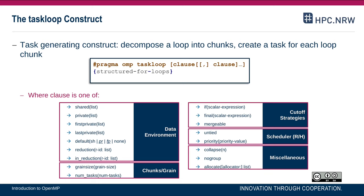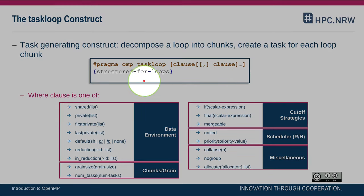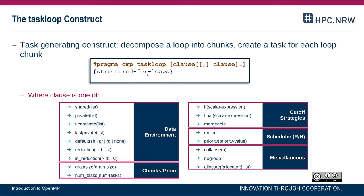The high-level view of the task loop construct is shown here. It is followed by a structured for loop, very similar to what we learned about in the for worksharing construct, and it accepts a set of clauses. These clauses can be sorted into at least five different domains. There are clauses to manage the data environment — shared, private, reductions, and so forth. There are two clauses to influence generation of chunks, which I will explain a few slides later.